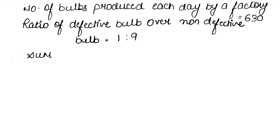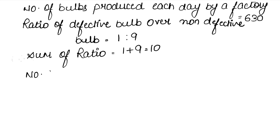We will take the sum of the ratio, which gives us the total number of bulbs. 1 defective plus 9 non-defective gives us 1 plus 9, which is 10.